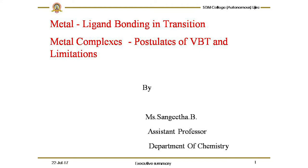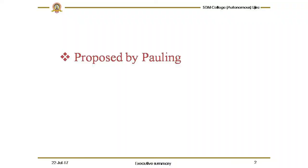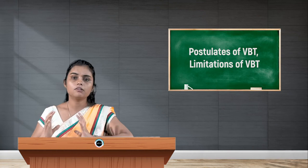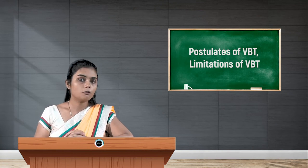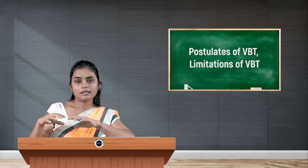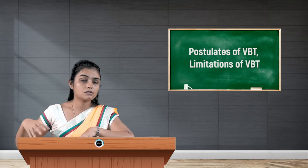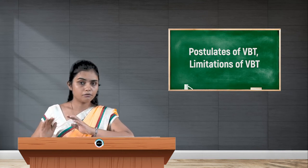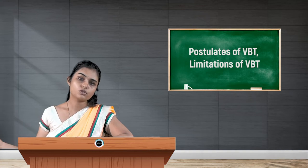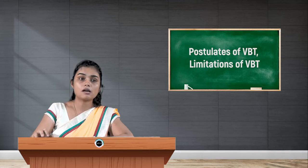The valence bond theory was proposed by Linus Pauling, who proposed VBT in order to explain the metal-ligand bonding in transition metal complexes. In my last video, I mentioned the hybridization and metal-ligand bonding in transition metal complexes, which takes place obeying the postulates of VBT. In this video, I will cover what those postulates are.